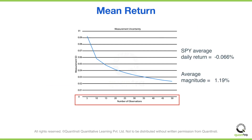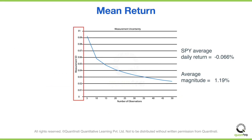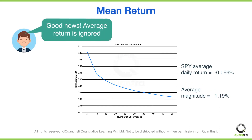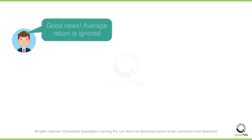You can see the number of observations on the x-axis and the sample standard deviation values on the y-axis. In 2022, the average daily return of SPY was minus 0.066%. The fact that we can neglect the average return is good news for us, as it is very variable and almost impossible to forecast.